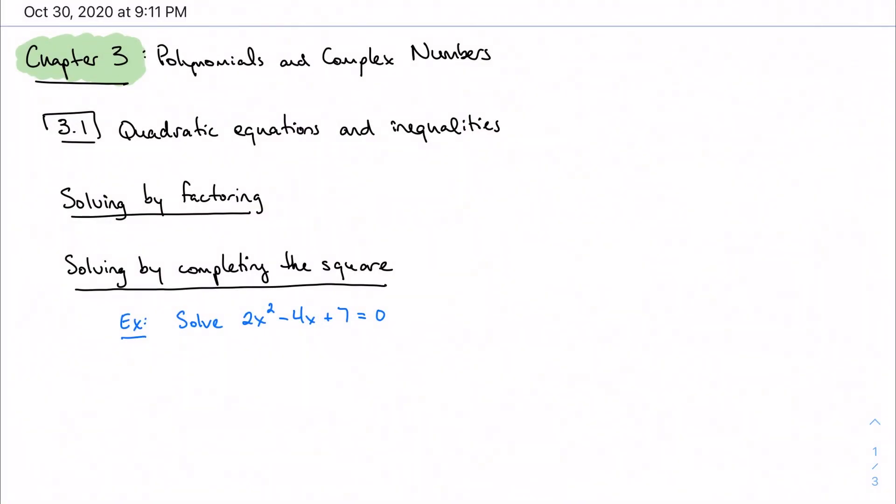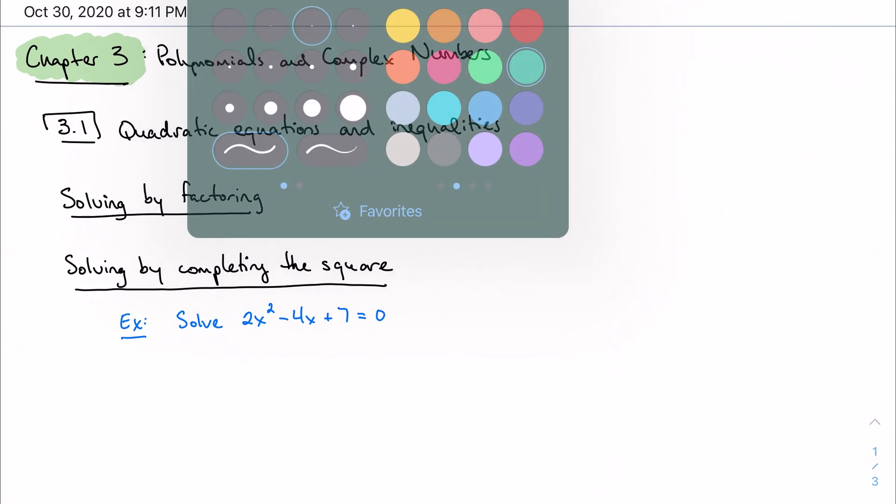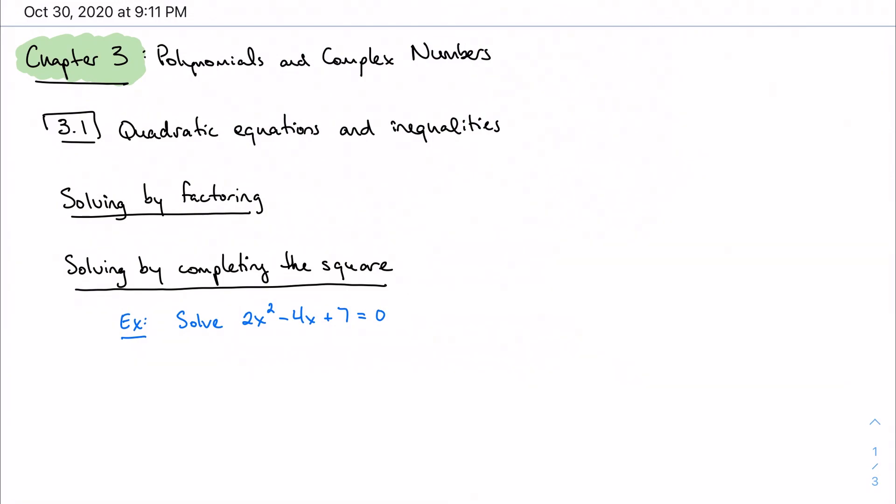So we're on to Chapter 3. We're talking about polynomials and complex numbers. A lot of this will look like Algebra 2 review, I hope. But if not, that's what these notes are for.